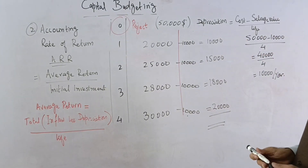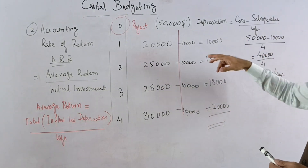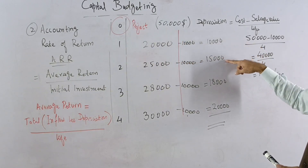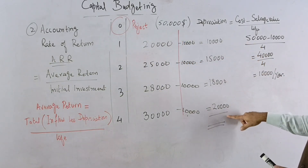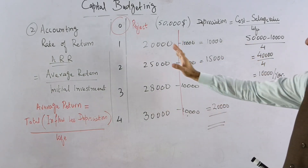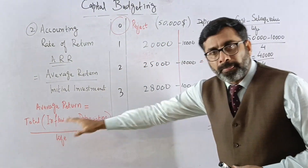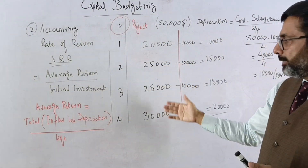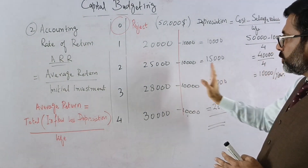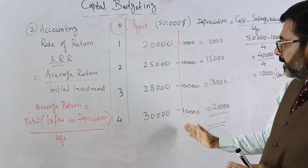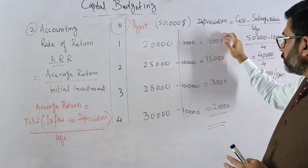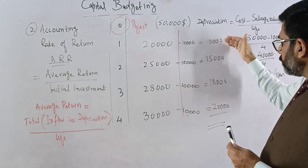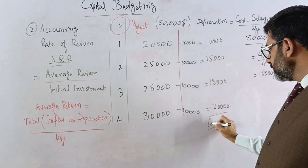So for the four years we have net returns of 10,000, 15,000, 18,000, and 20,000. These are calculated from the inflows of 20,000, 25,000, 28,000, and 30,000 minus depreciation of 10,000 each year. The total of these returns is 63,000.